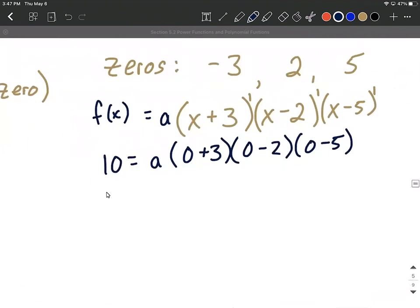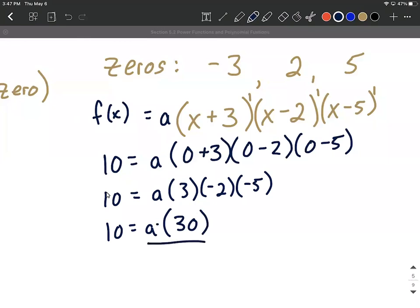So what I'm going to do first is we know that zero plus three is three zero minus two is negative two and zero minus five is negative five. If I multiply all those constants together on the right hand side I'm going to get a positive 30. So a multiplied by positive 30 to get a all by itself and to solve for it we'll divide both sides by a. So that gives us a equals with a little reducing down one-third.